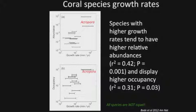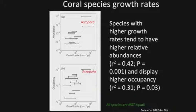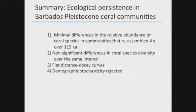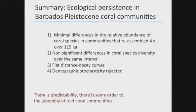This distribution is not random — it's very much structured according to growth rates, which goes against any notion that species are all equal. To summarize this part of the talk: we find ecological persistence in these Pleistocene coral communities, minimal differences in the relative abundance of coral species over 115,000 years, flat distance decay curves, and demographic stochasticity is rejected. There is predictability and order to the assembly of these reef coral communities.